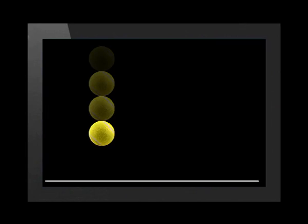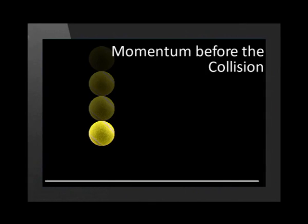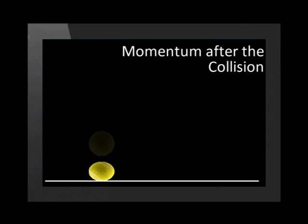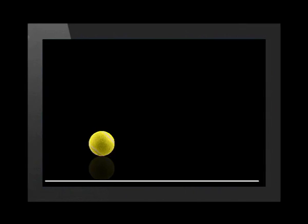As the ball approaches the floor, it has a momentum that we call the momentum before the collision. When it moves away from the floor, it has a different momentum called the momentum after the collision. The bounce on the floor can be thought of as a collision taking place where the floor exerts a force on the tennis ball to change its momentum.